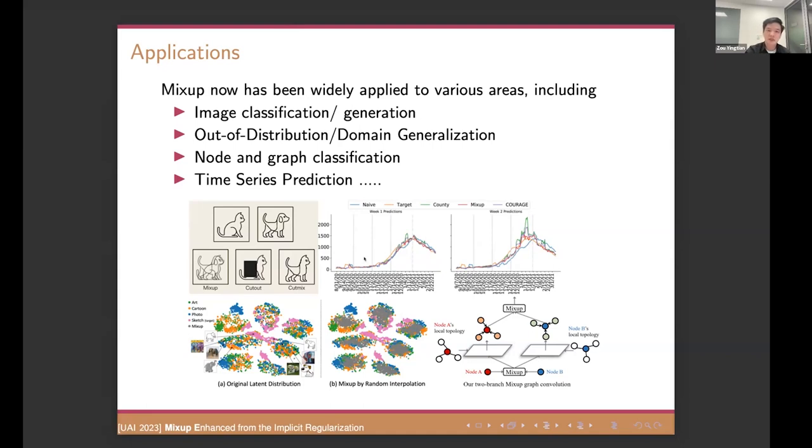All right. So simple but useful mixup carries a significant value and has been widely applied to various areas such as image classification and time series. We can see if you have two different time series, you can use the mixup to generate a new time series to enhance your classification. And it also has been used in the domain generalization. You can mix the samples from the different domains to generate more confused samples for better domain generalization and as well as the graph classification.